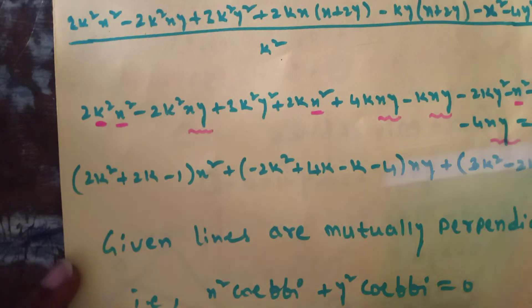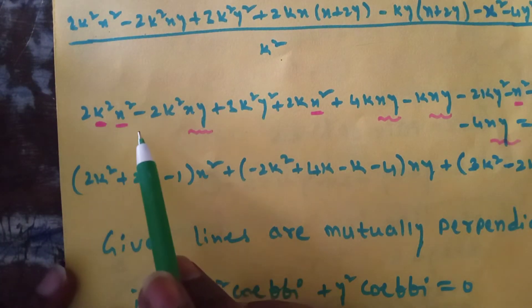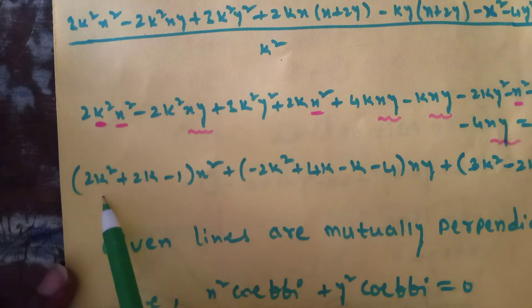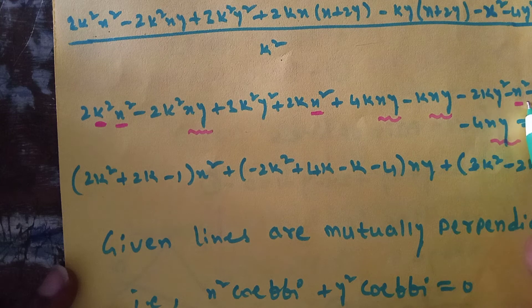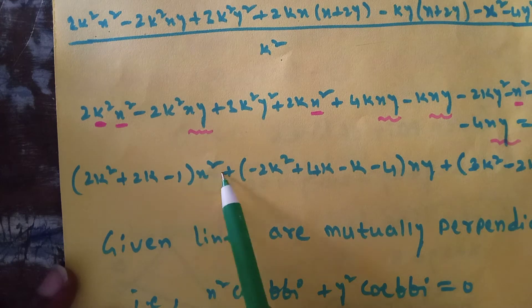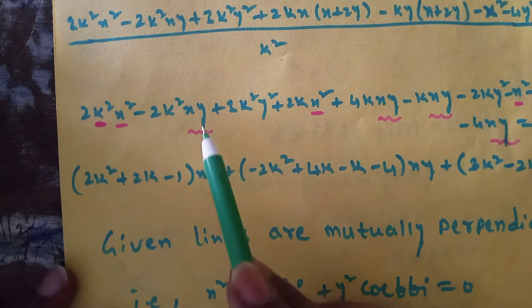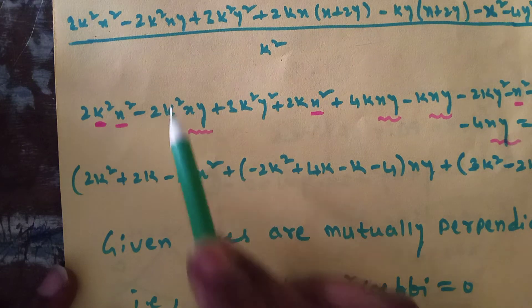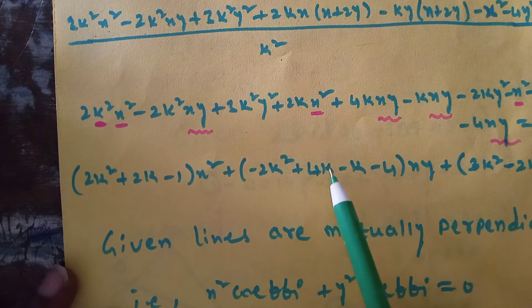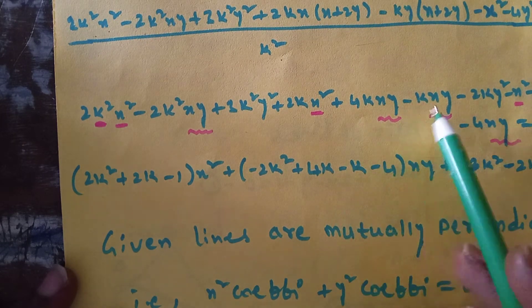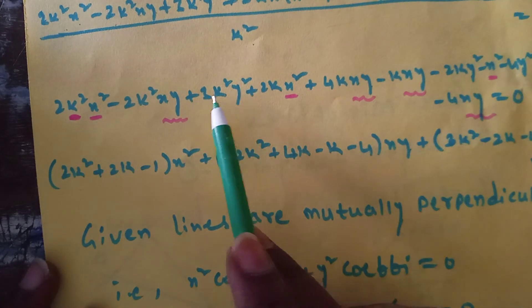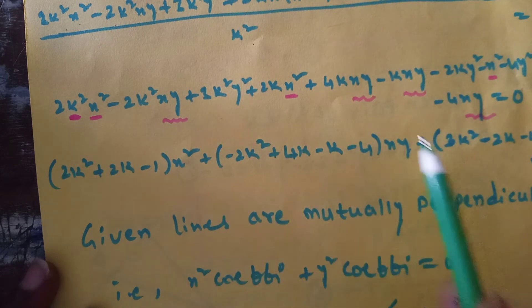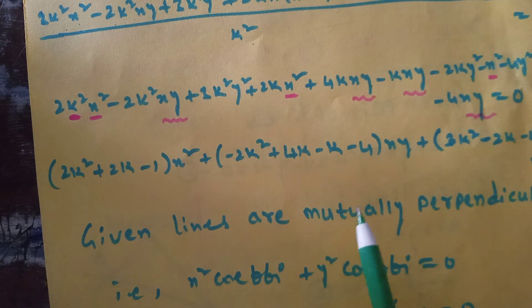Now collect common coefficients. The x² coefficient is: 2k² + 2k - 1. The xy coefficient is: -2k² + 4k - k - 4. The y² coefficient is: 3k² - 2k - 4. So the equation becomes: (2k² + 2k - 1)x² + (-2k² + 3k - 4)xy + (3k² - 2k - 4)y² = 0.